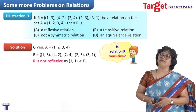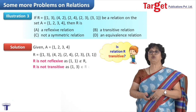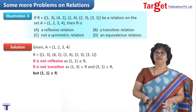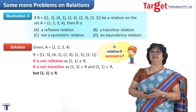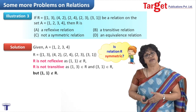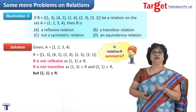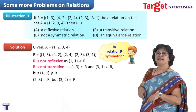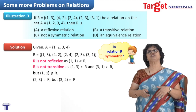Is the relation transitive? For transitivity, I take pairs like (1,3) and (3,1) — both in the set — but (1,1) is not in the set. So the relation is not transitive. Now for symmetric: I check if whenever (a, b) is in the relation, (b, a) is also there. I observe that (2,3) is in the set but (3,2) is not. So the relation is not symmetric.